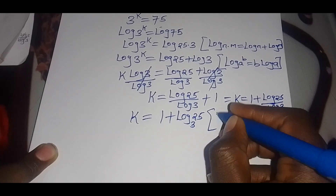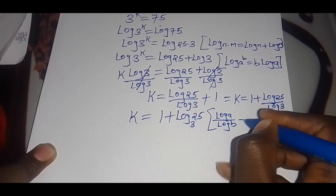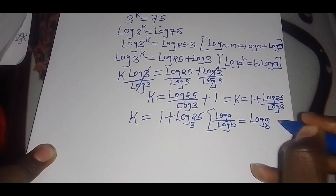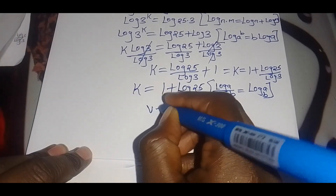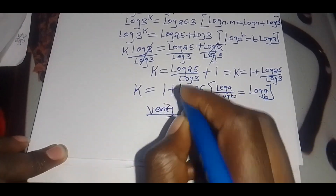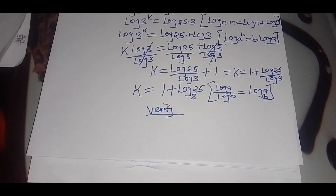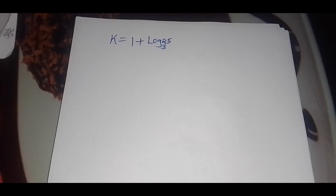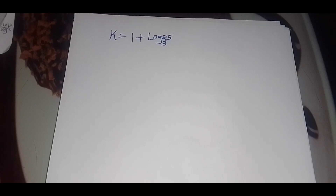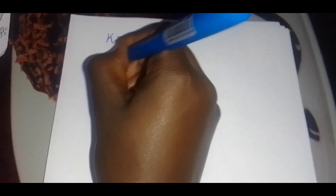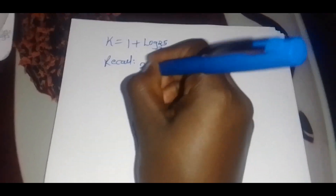Applying the change of base identity, which states that log(a) divided by log(b) equals log base b of a, so k equals 1 plus log base 3 of 25. Let us verify that this value of k is correct.